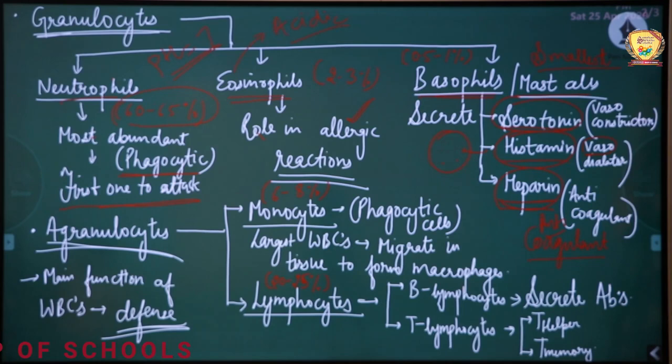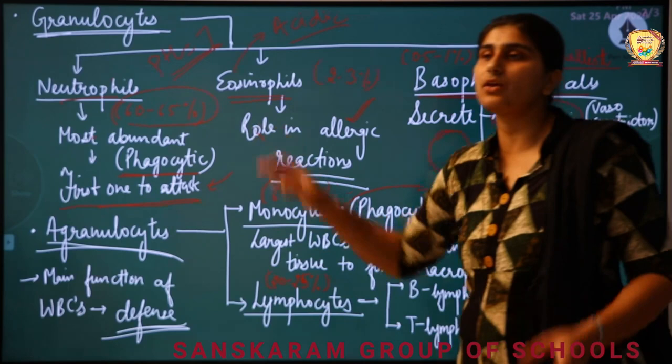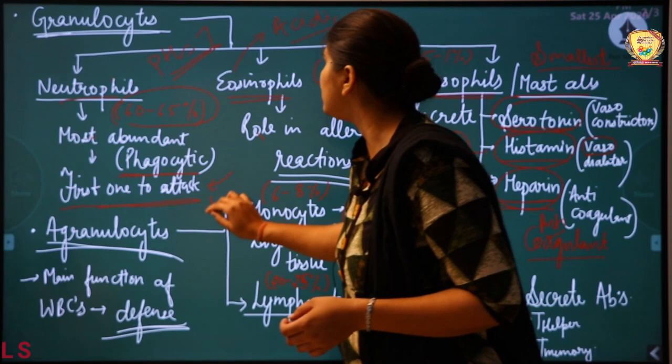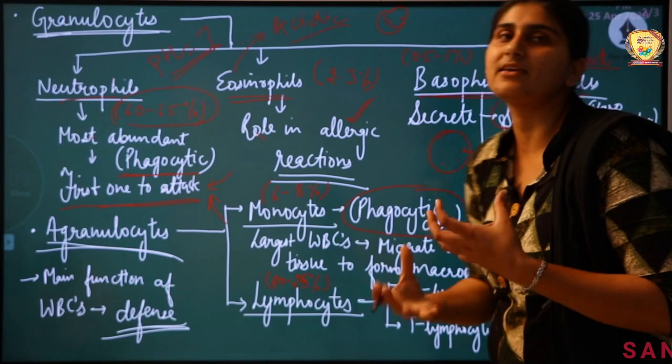6–8% monocytes and 20–25% lymphocytes — these are the NCERT-given concentrations. Talking about monocytes: just like neutrophils, they are phagocytic. As mentioned, neutrophils are the first to attack. If they cannot control the situation, they call upon monocytes. Monocytes are also phagocytic in nature — they will engulf and eat up the foreign particle.